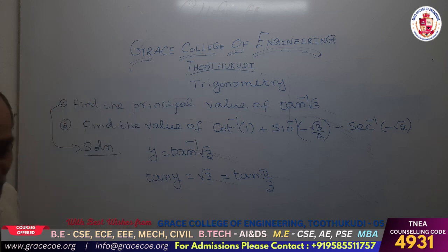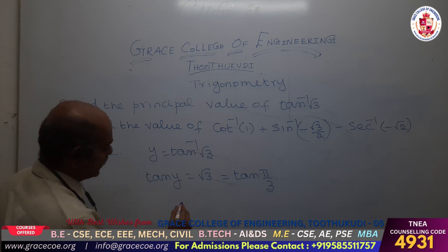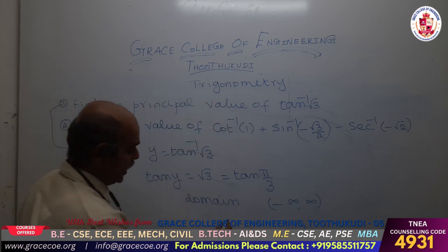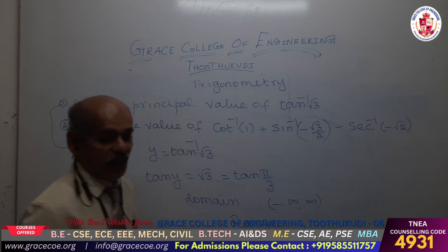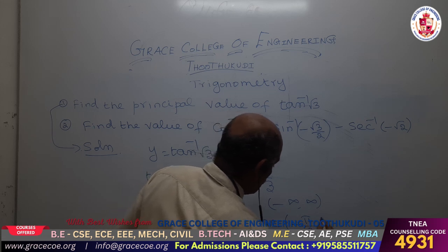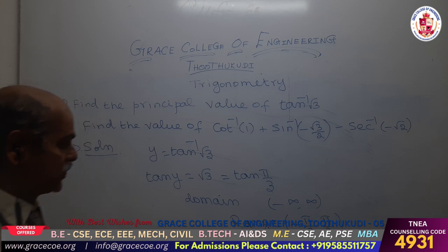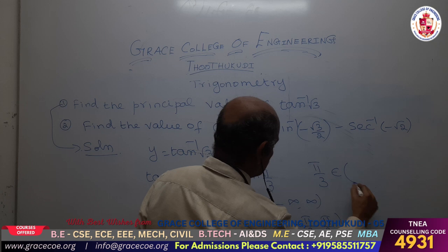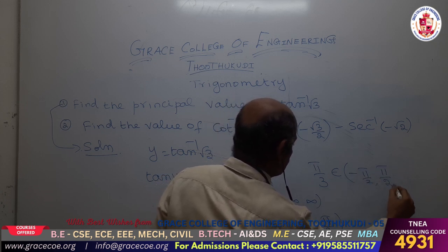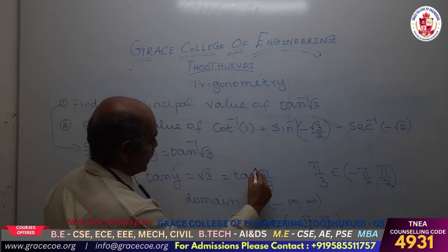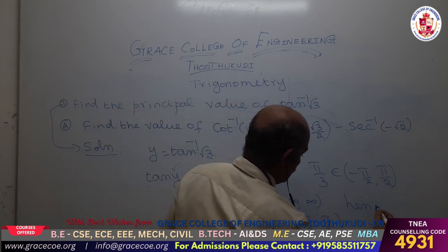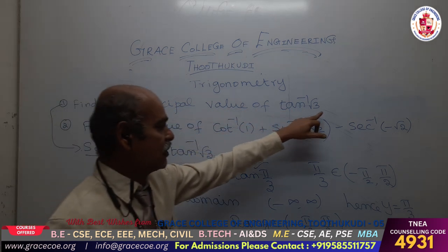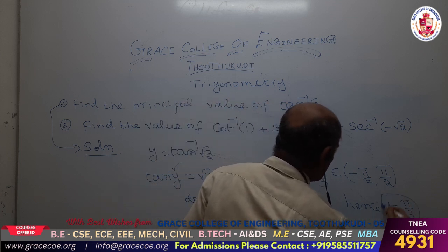Now we are going to find the domain of the tan function, which is minus infinity to plus infinity, and its range is minus pi by 2 to plus pi by 2. This is the range of the tan inverse function. Therefore tan y equals pi by 3. Also, pi by 3 lies between minus pi by 2 and plus pi by 2. Hence y equal to pi by 3. So this is the principal value of tan inverse of root 3, and this is the solution for the first problem.